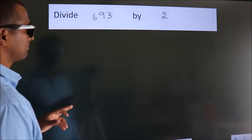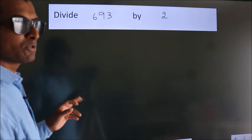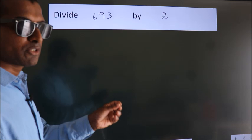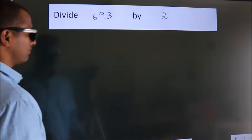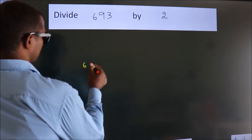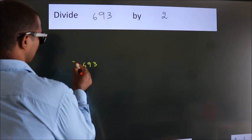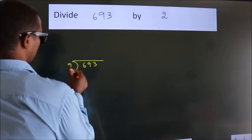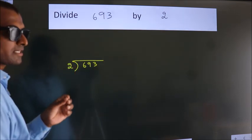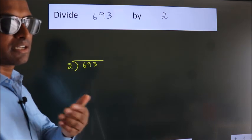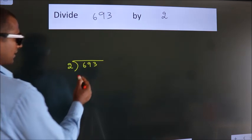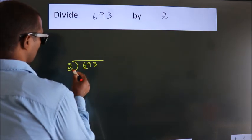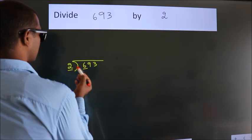Divide 693 by 2. To do this division, we should frame it in this way: 693 here, 2 here. This is your step one. Next, here we have 6. 2 when do we get 6 in 2 table? 2 threes 6.